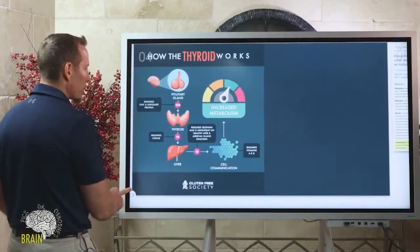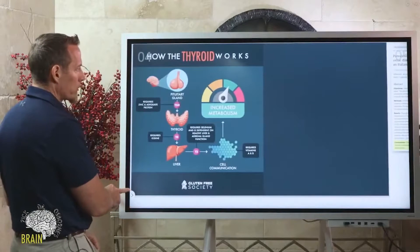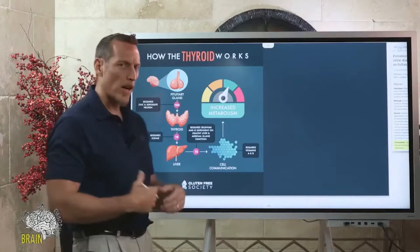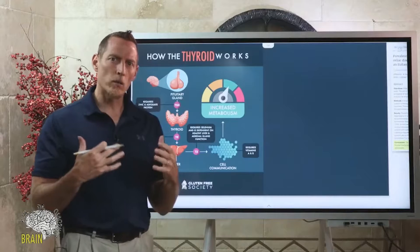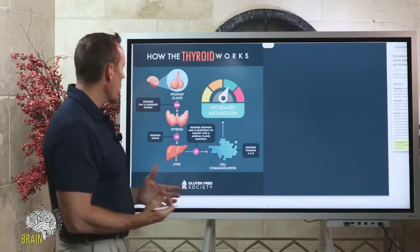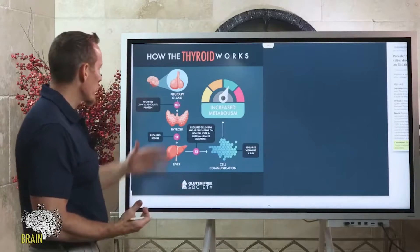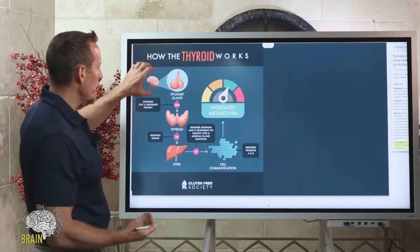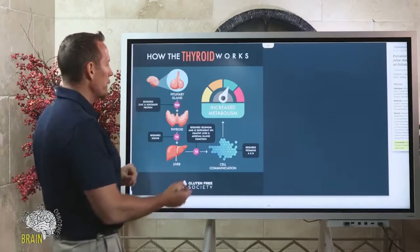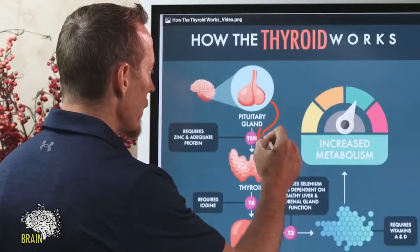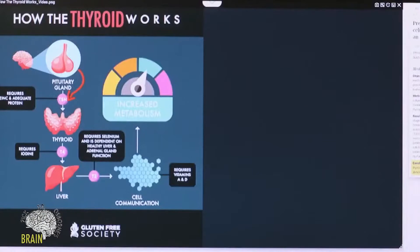We're going to look at how the thyroid works — basically thyroid biochemistry 101, oversimplified. What happens is in your brain there's a gland called the pituitary gland, and its job is to produce the hormone TSH.